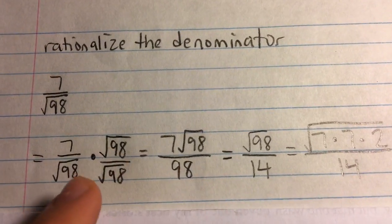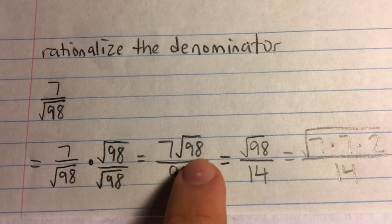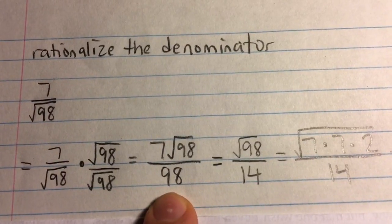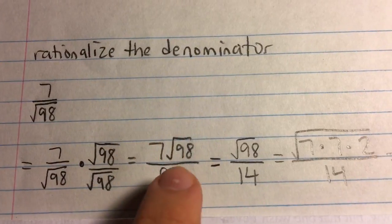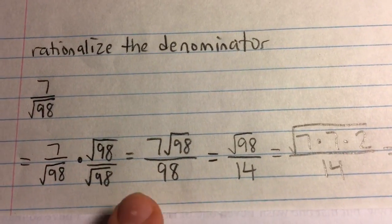So this is what we're going to get. 7 times root 98 in the numerator and just 98 in the denominator. And now we can see that this is actually rationalized, but if you want to simplify further,